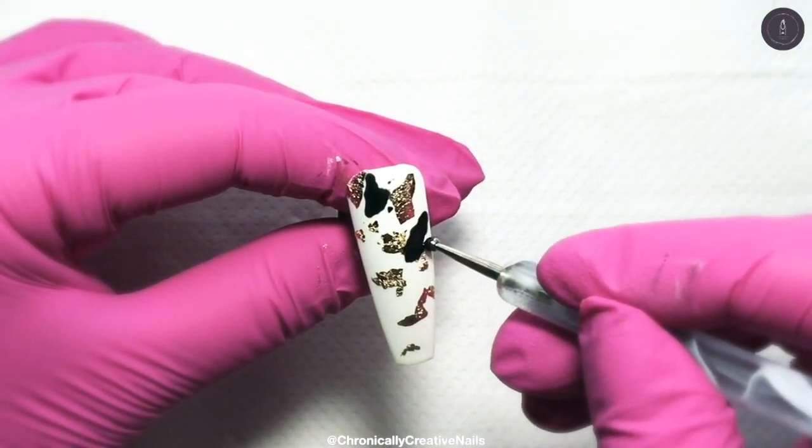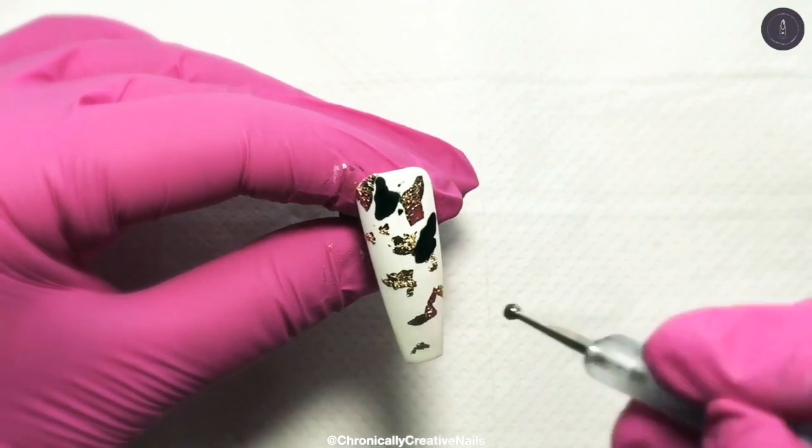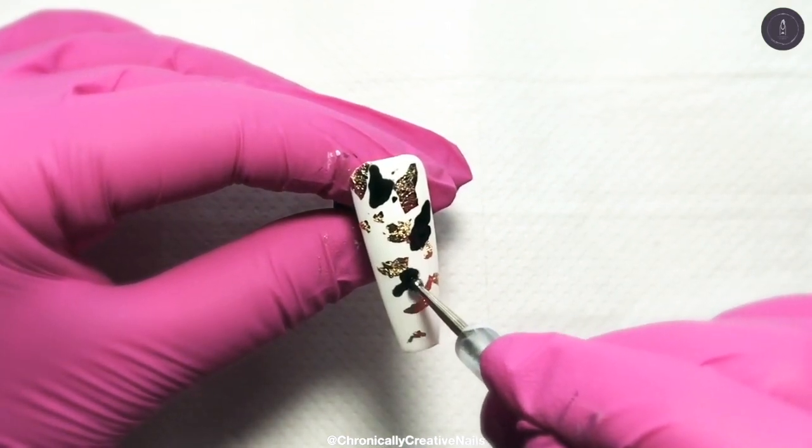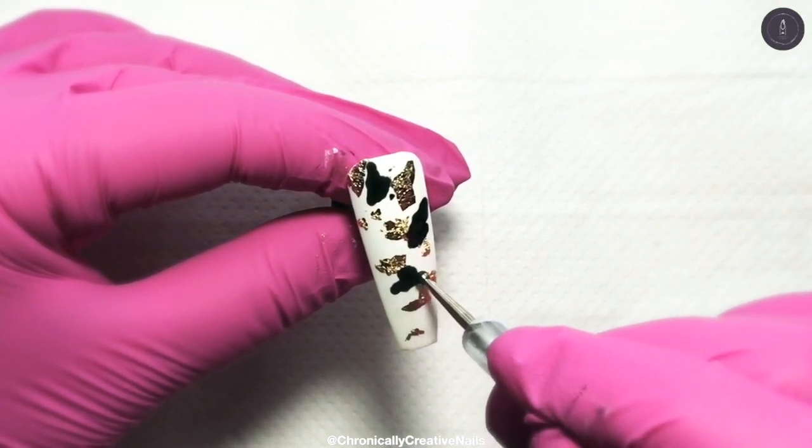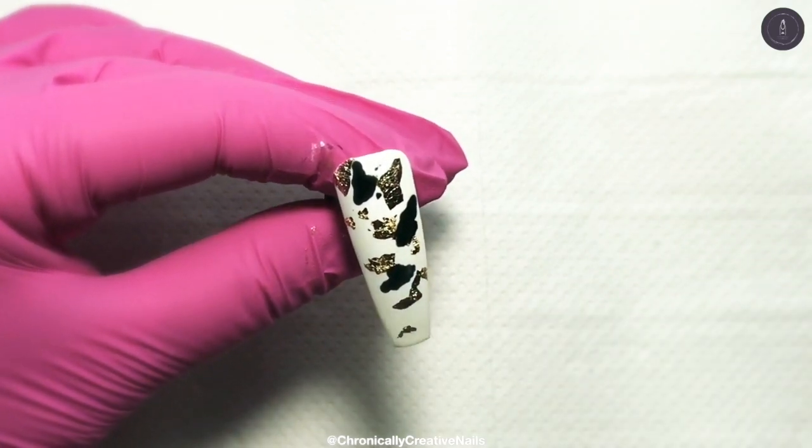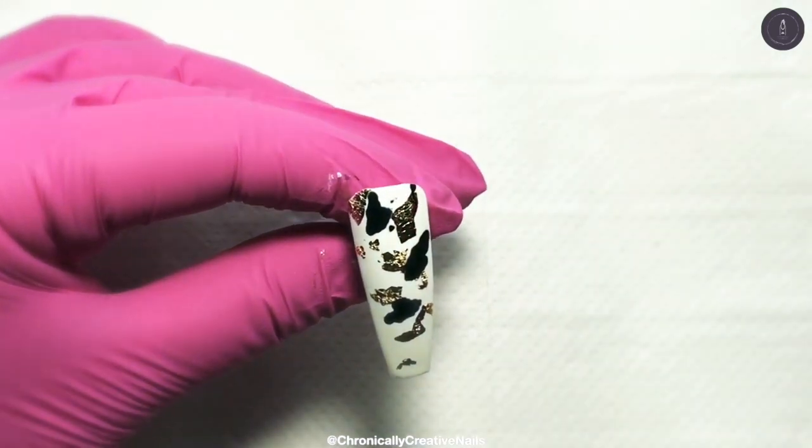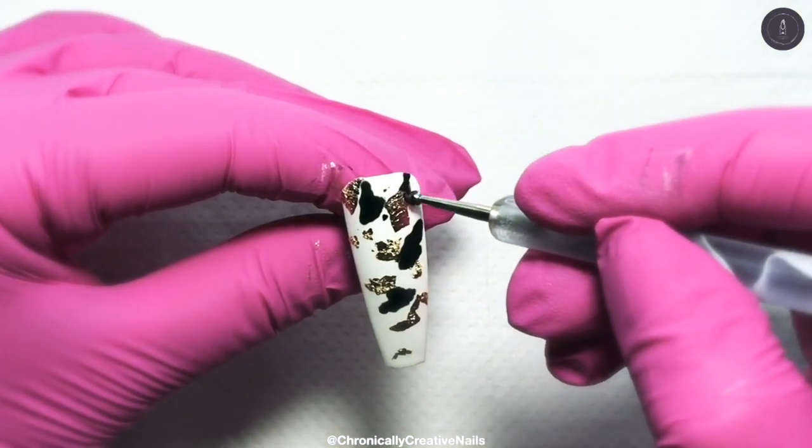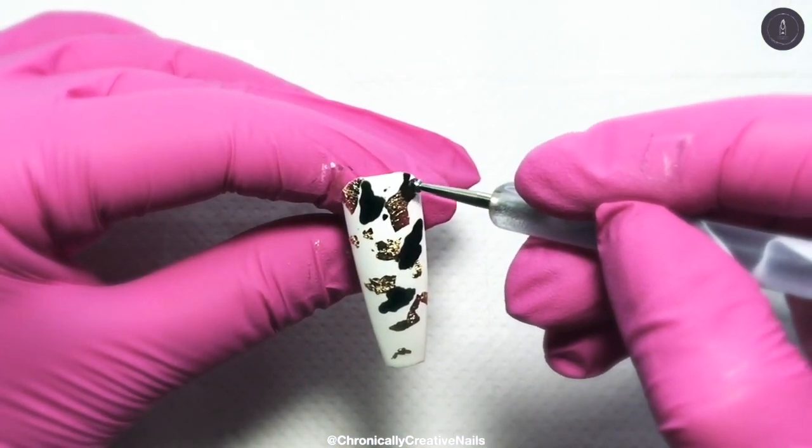So if you touch it by accident it doesn't really matter because it's going to look like it's part of the design anyway. So I'm just adding these wherever I feel like it. If you want to cover up a bit of the gold then you can do it using this.